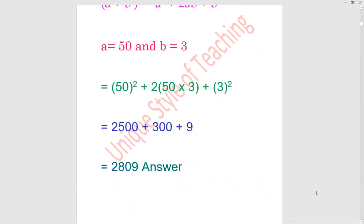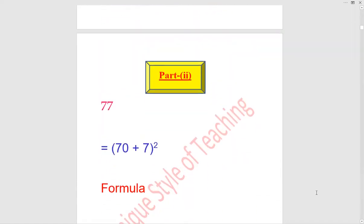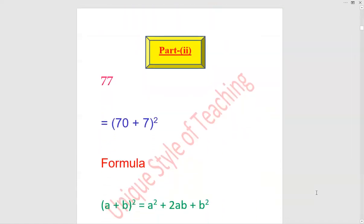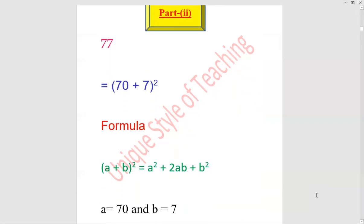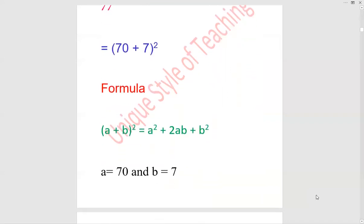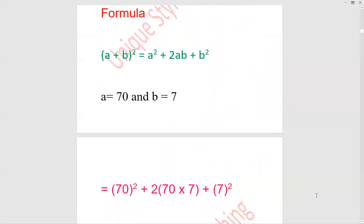For part two, 77. 77 can be written as 70 plus 7 whole square. Formula: (a + b)² = a² + 2ab + b². a value is 70, b value is 7. Plug it accordingly: 70² plus 2 × 70 × 7 plus 7².